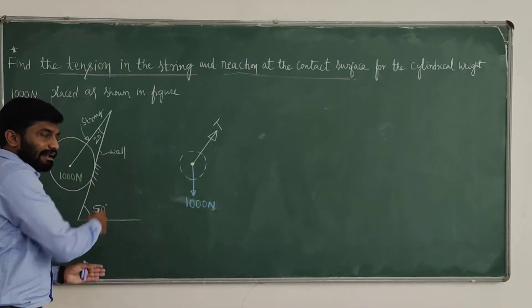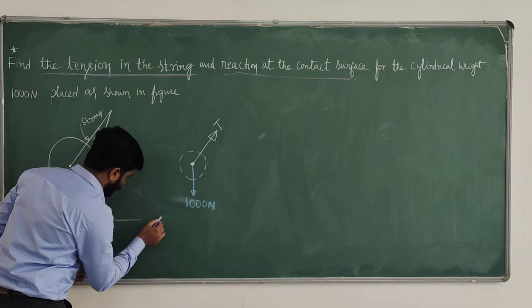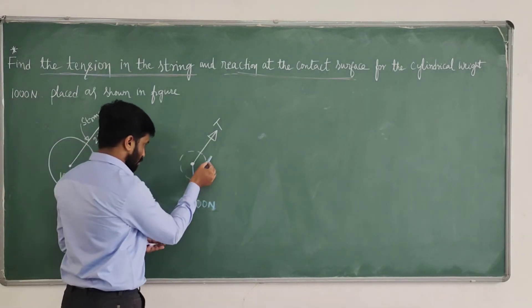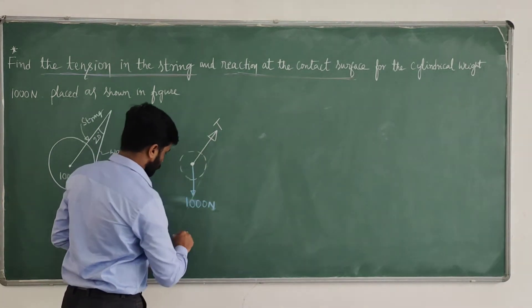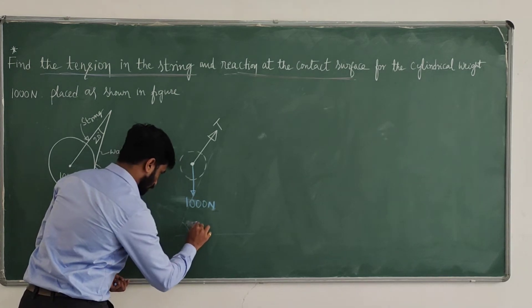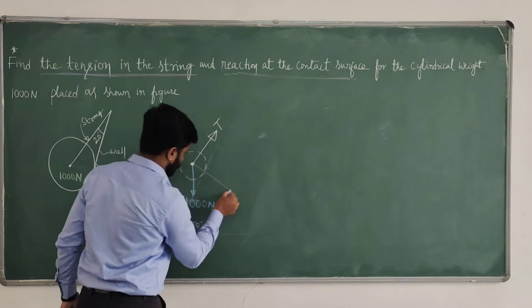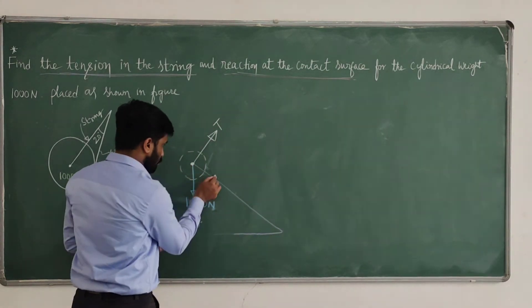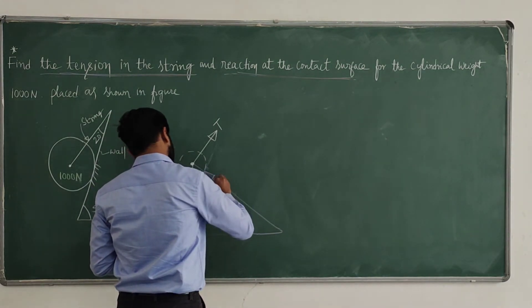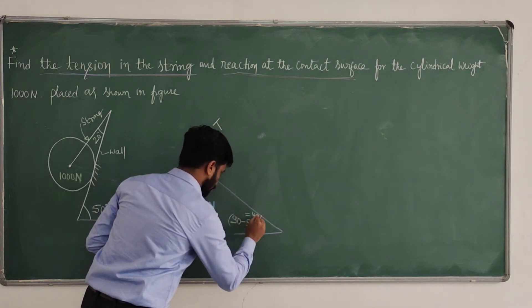We are having an inclined contact surface. Drop a perpendicular to the contact surface. Because here you are having a contact surface, and the reaction is perpendicular to it. This angle of inclination is 50 degrees. When you drop the perpendicular, this angle is 90 degrees. So the reaction angle becomes 90 minus 50, which will become 40 degrees.